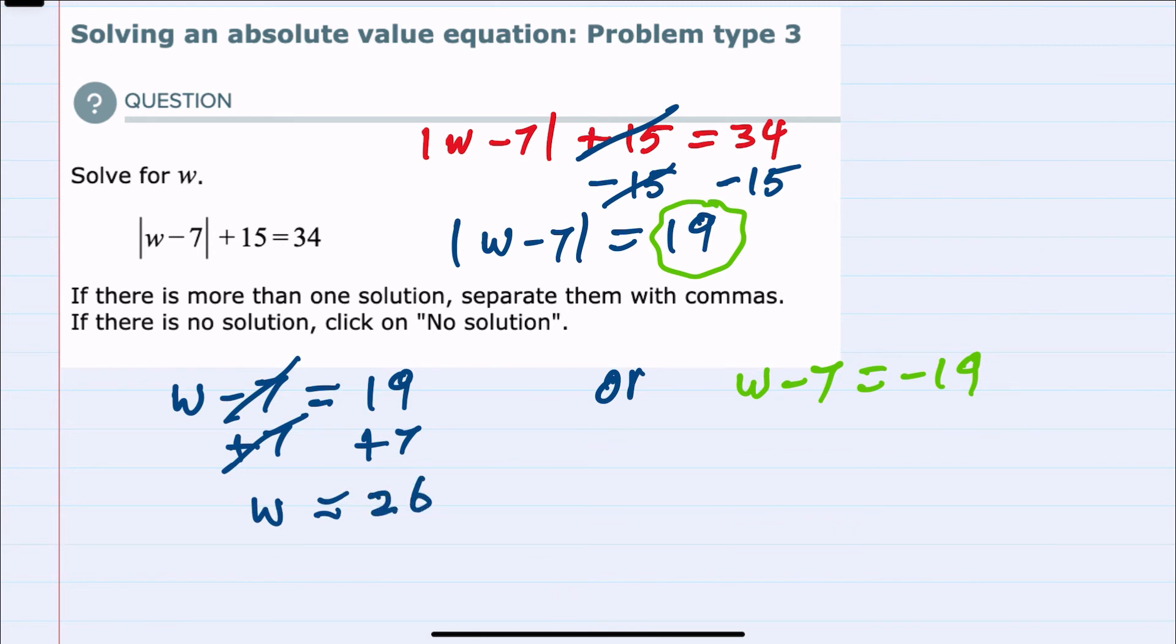On the right-hand side, adding the 7 also isolates the W, but this time gives us a negative 12.